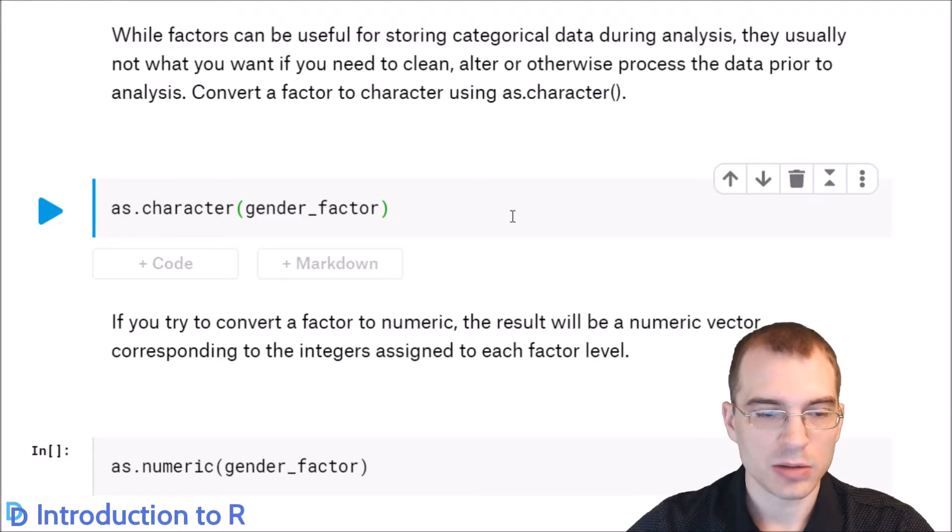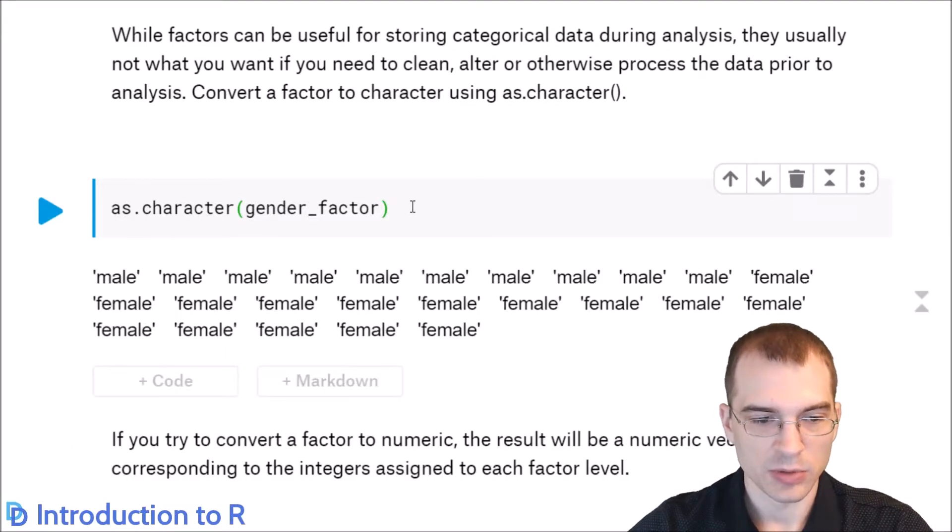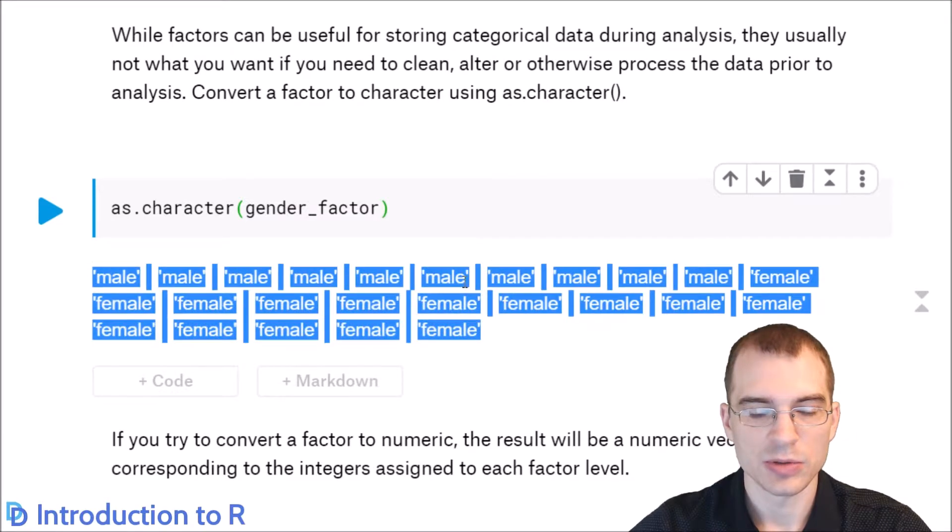You can convert data that is in a factor back to character using the as.character function. So if we run as.character on this gender factor, we'll just get back a character vector with all the values. And in some cases, this may be what you want when you load in data frames. So in that case, you pass the strings as factors equals false argument when you construct the data frame.